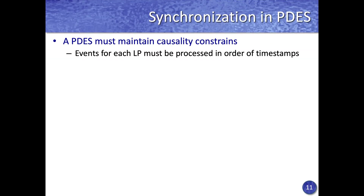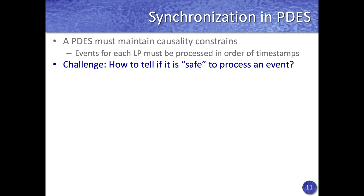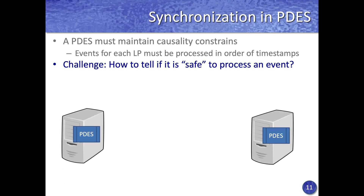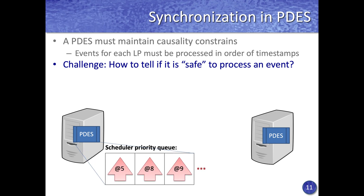A parallel simulation must continue to maintain and adhere to the causality constraints of a traditional sequential simulation — that means events must be processed in the order of timestamps. The challenge with parallel simulation is how to tell if it is safe to process an event. Consider a parallel simulation running on two compute nodes with pending events at times 5, 8, and 9.